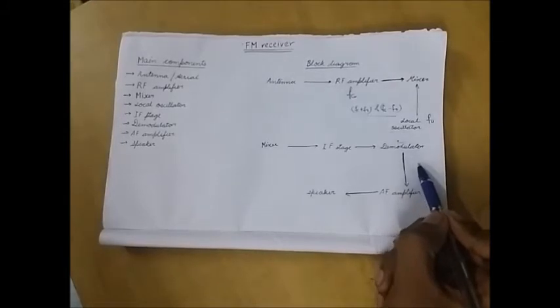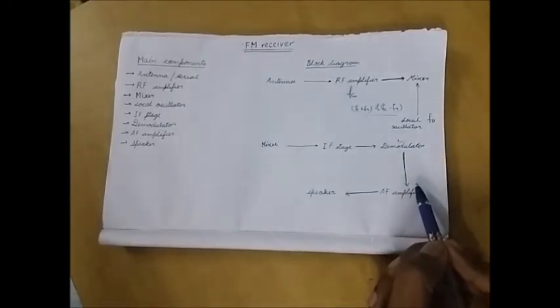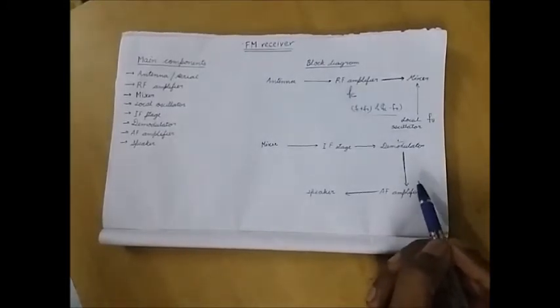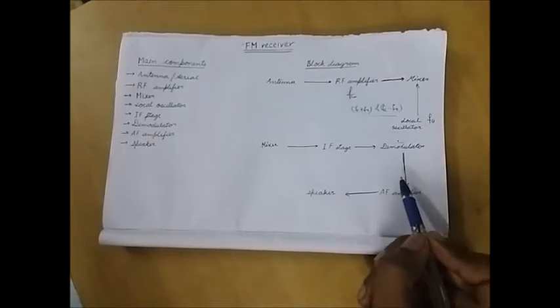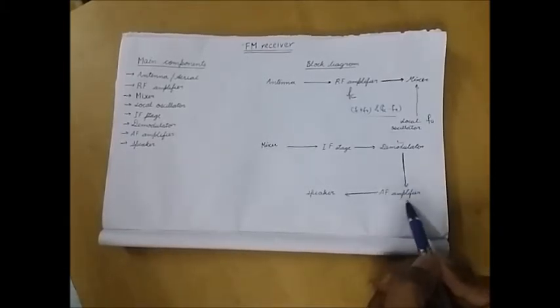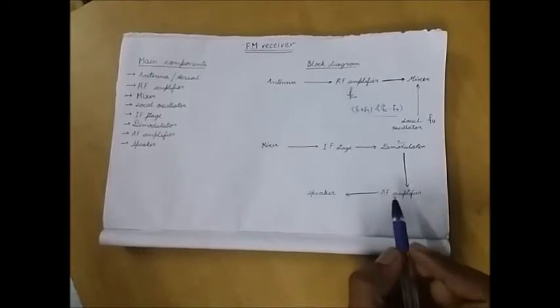Then the audio waves are sent to the AF amplifier, audio frequency amplifier. Audio frequency amplifier receives the audio waves from the demodulator and amplifies it to make a crystal clear audio.